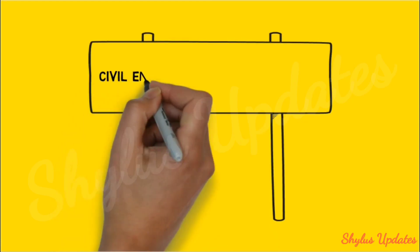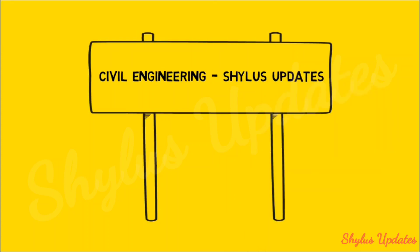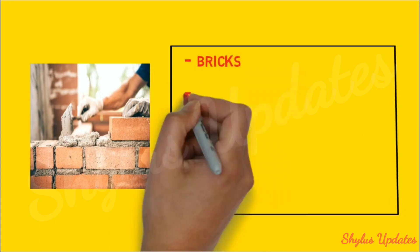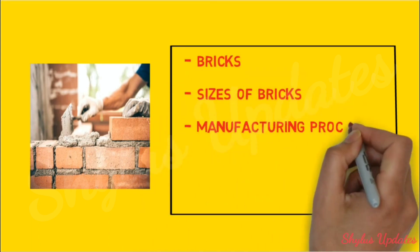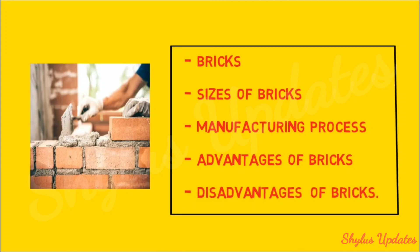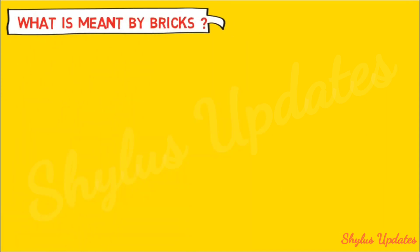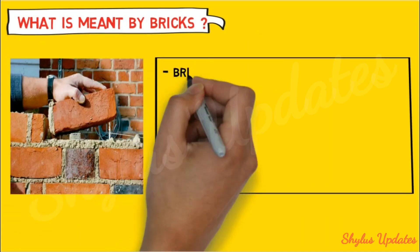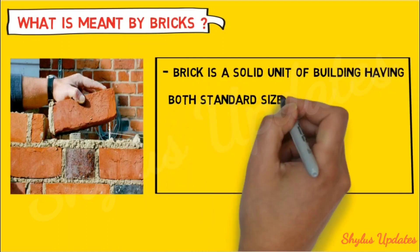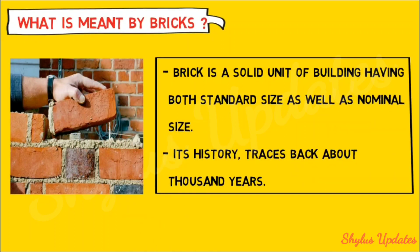Hello viewers, welcome to Civil Engineering Shilu's Updates. Today we are going to learn about bricks — sizes of bricks, manufacturing process of bricks, advantages of bricks, and disadvantages of bricks. What is meant by bricks? A brick is a solid unit of building having both standard size as well as nominal size. Its history traces back about a thousand years.